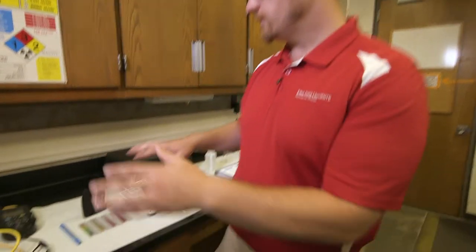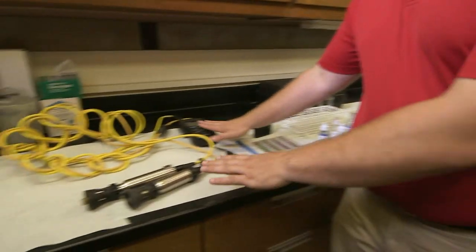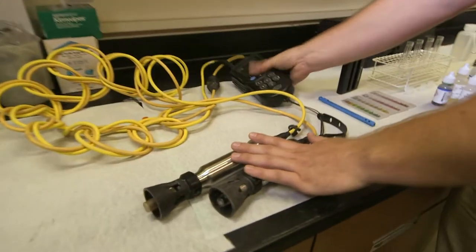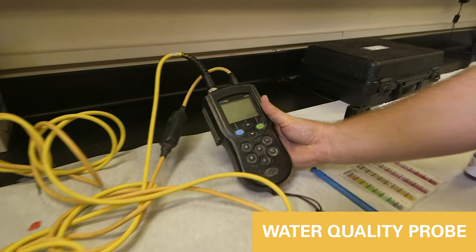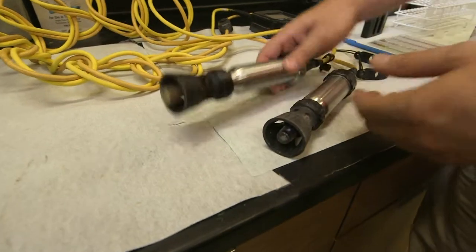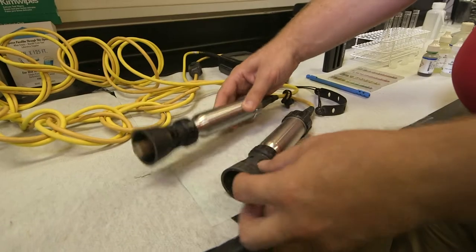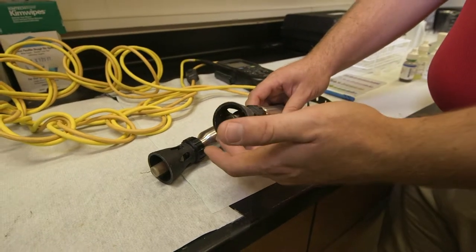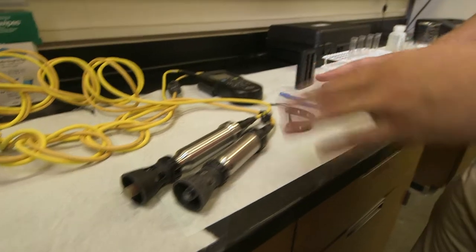We have several different types of materials. This one in particular is a probe that we can drop down in the water. This one measures temperature, pH, and dissolved oxygen. This is the pH probe. We'll pull this cap off and put that in the water. And this is a dissolved oxygen probe that uses light in order to determine how much oxygen is dissolved in the water.